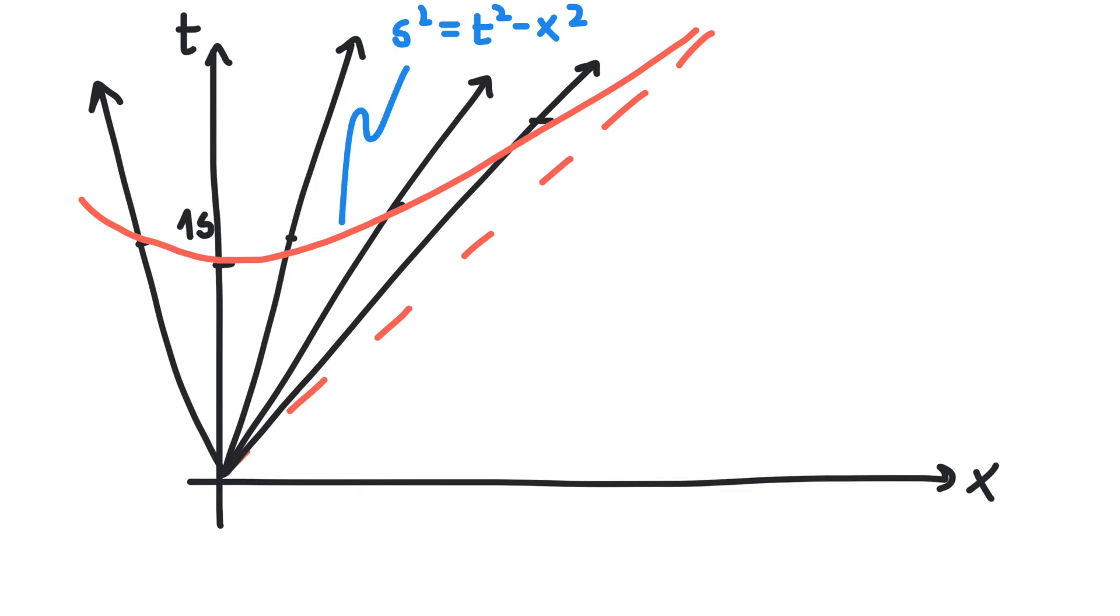We define the length of a second as the vector t equals 1 and x equals 0. This gives s squared equals 1. And that's the equation for a hyperbola.